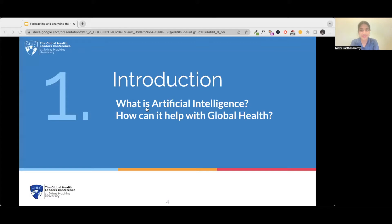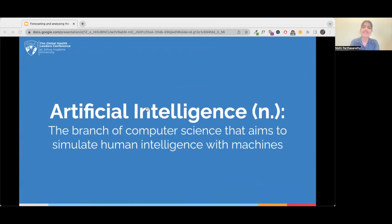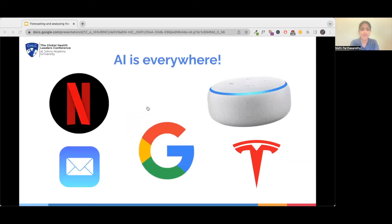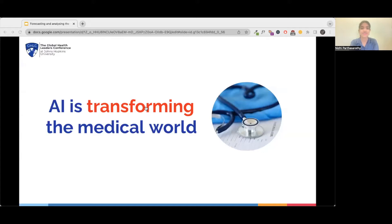So let's get started with AI and global health. What is AI? AI is the branch of computer science that aims to simulate human intelligence with machines. From Netflix recommendations to Alexa and Google search, autonomous vehicles and even spam filters in email, AI is really everywhere. But AI doesn't just impact your TV and search recommendations. AI is transforming the medical world as well.